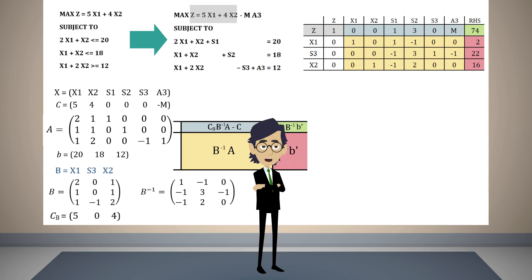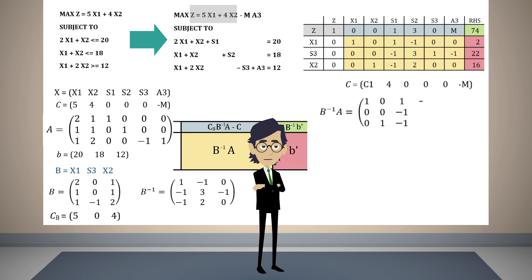Now let us discuss what happens when the cost coefficients of the objective function change. Note that it is not possible to modify the coefficients of the slack variables, surplus variables, or artificial variables. Consequently, in this example it is only possible to modify the cost coefficients of variables x1 and x2. Let us investigate the range of the coefficient of x1 such that the current basic variables continue being part of the solution. Let c1 be the coefficient of x1 in the objective function. Recall that B-inverse times A is the yellow section in the final table. Since x1 is a basic variable, the vector of coefficients of the basis will be [c1, 0, 4].